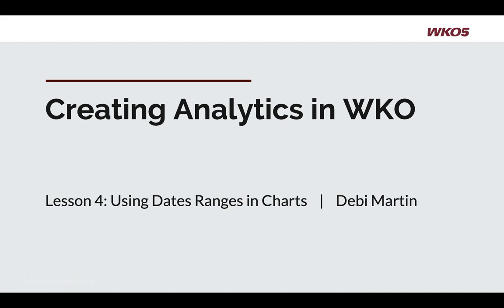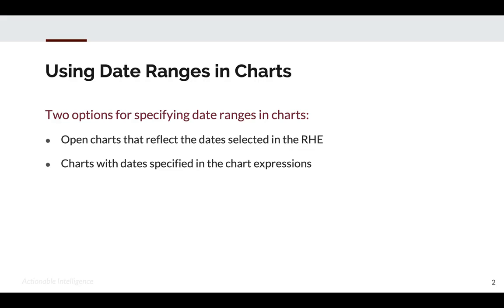Welcome to another chapter in the Creating Analytics in WKO series. This is Lesson 4: Using Date Ranges and Charts. There are basically two options for specifying and changing date ranges in charts. The first and simplest is to select date ranges in the right-hand explorer, and the second is to build charts with dates built right into the data series. We are going to cover each one of those today.